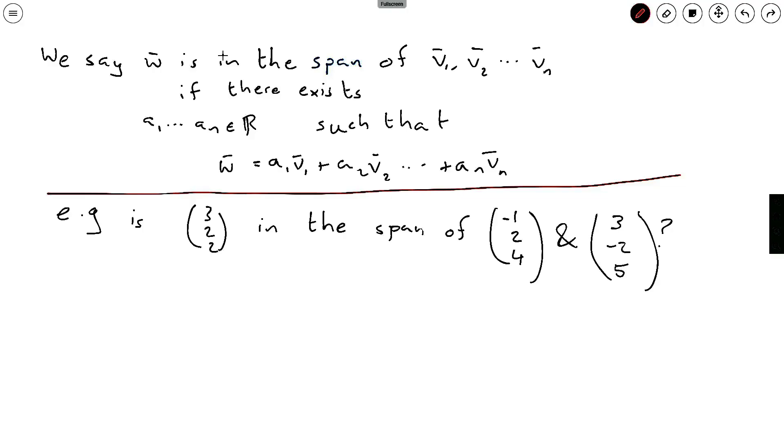And so what this question might look like in practice is: is the vector (3,2,2) in the span of (-1,2,4) and (3,-2,5)? So in this example we'd have this (3,2,2) would be our w and this (-1,2,4) would be our v1 and this (3,-2,5) would be our v2. And the question is, to write that literally,